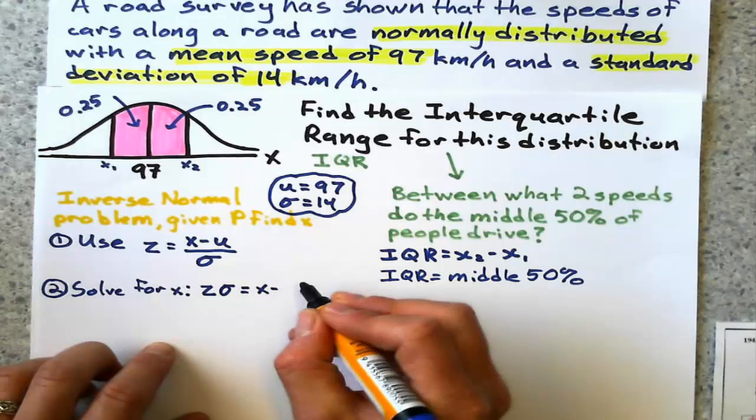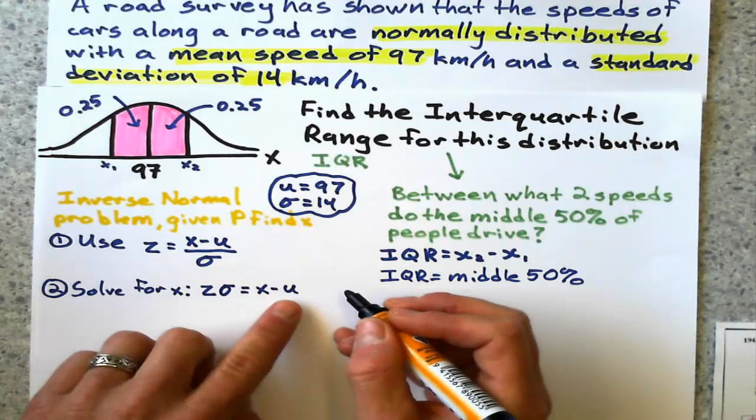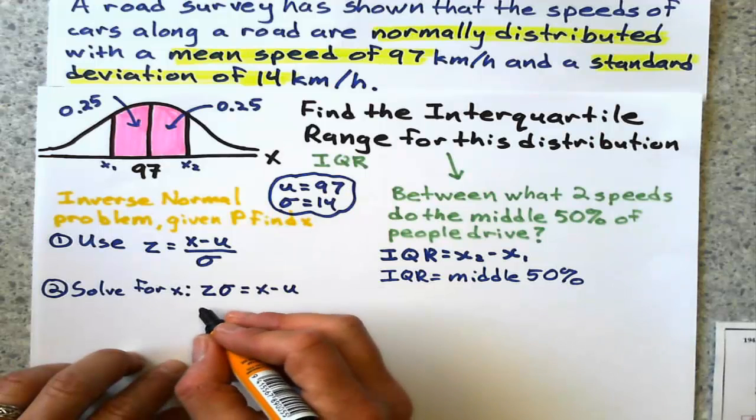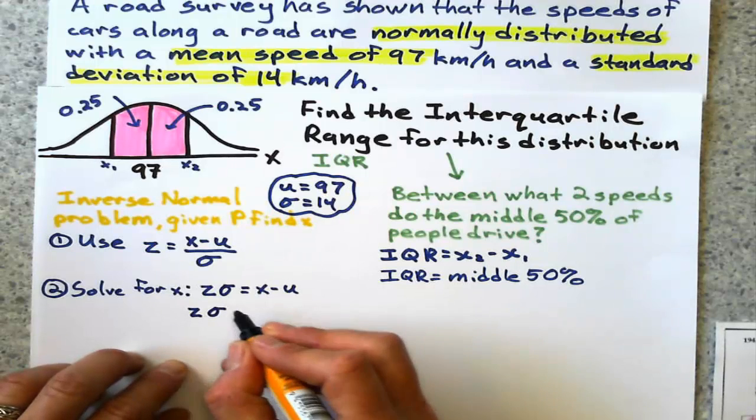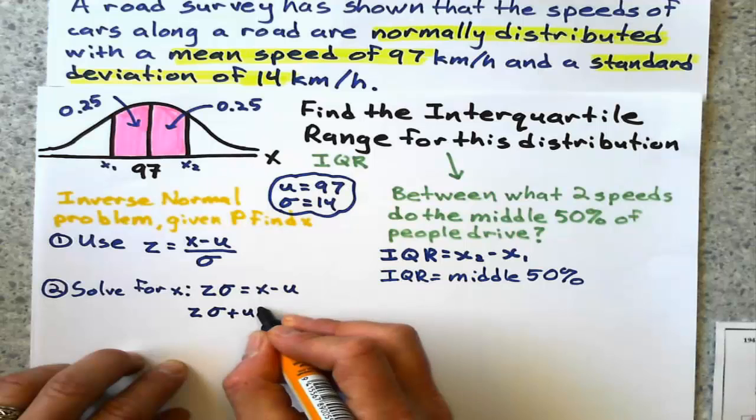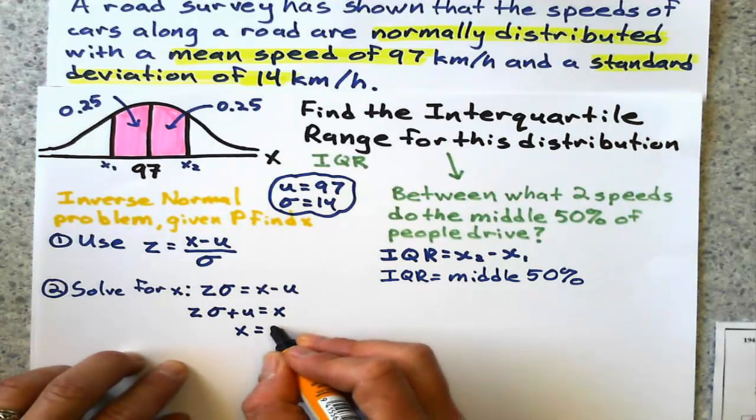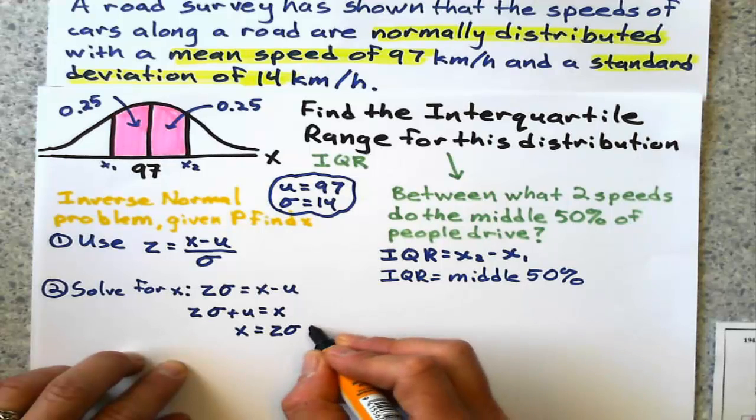Then I add the mean to the other side, and I would get Z times the standard deviation plus the mean equals X. I like the X on the left-hand side, so it looks like X = Zσ + μ.